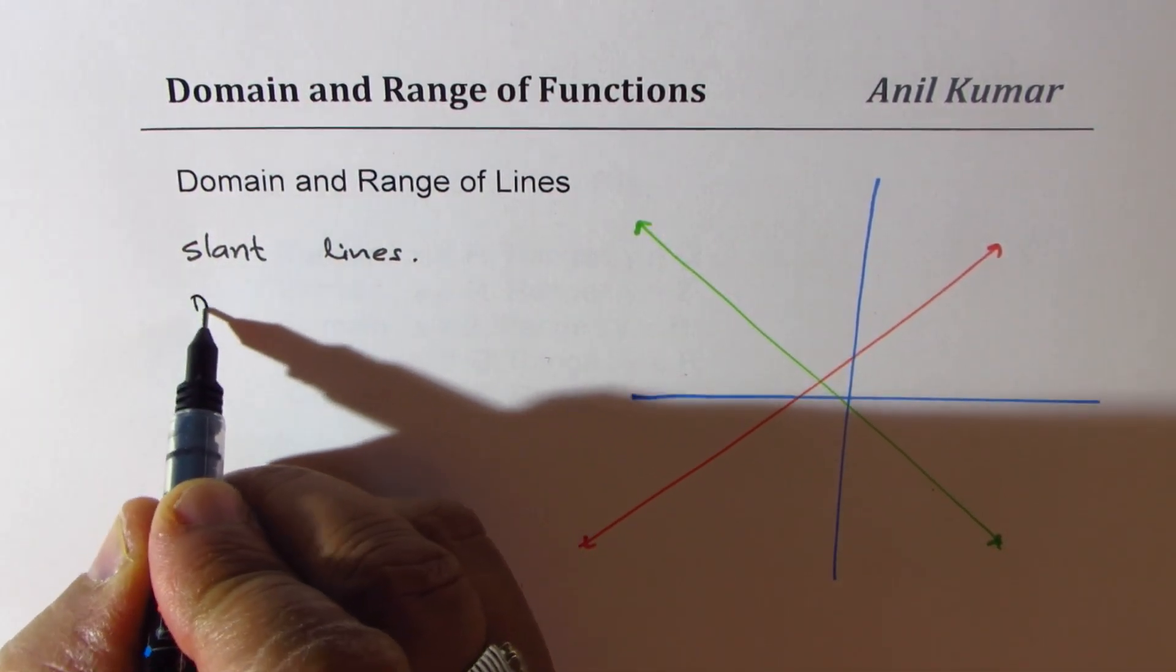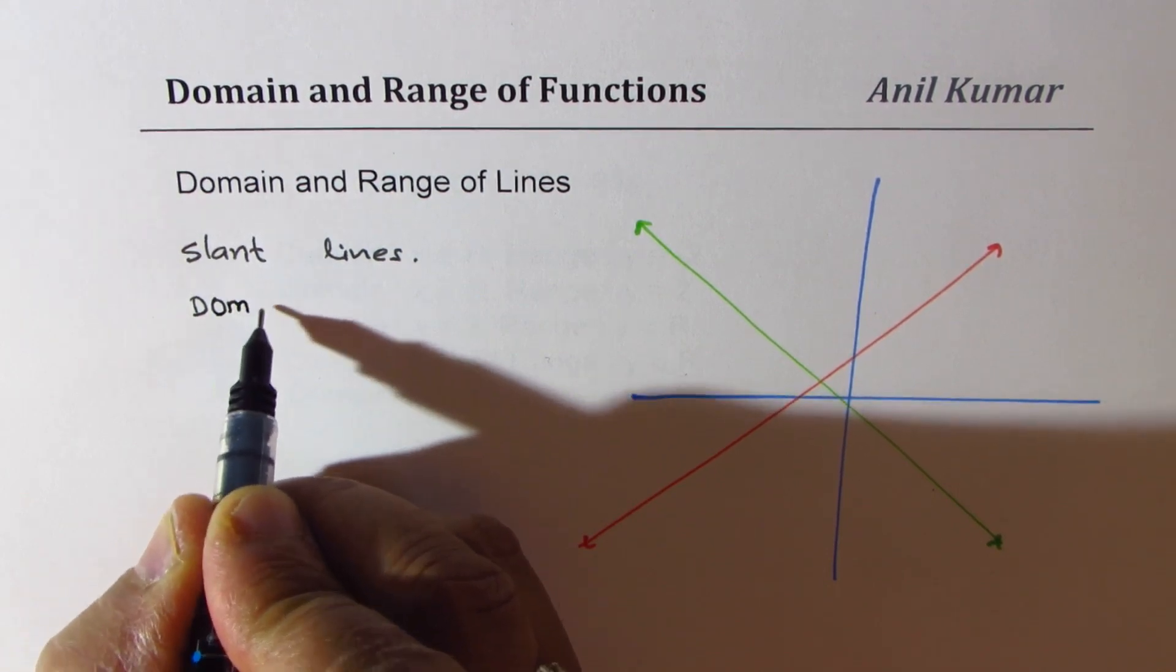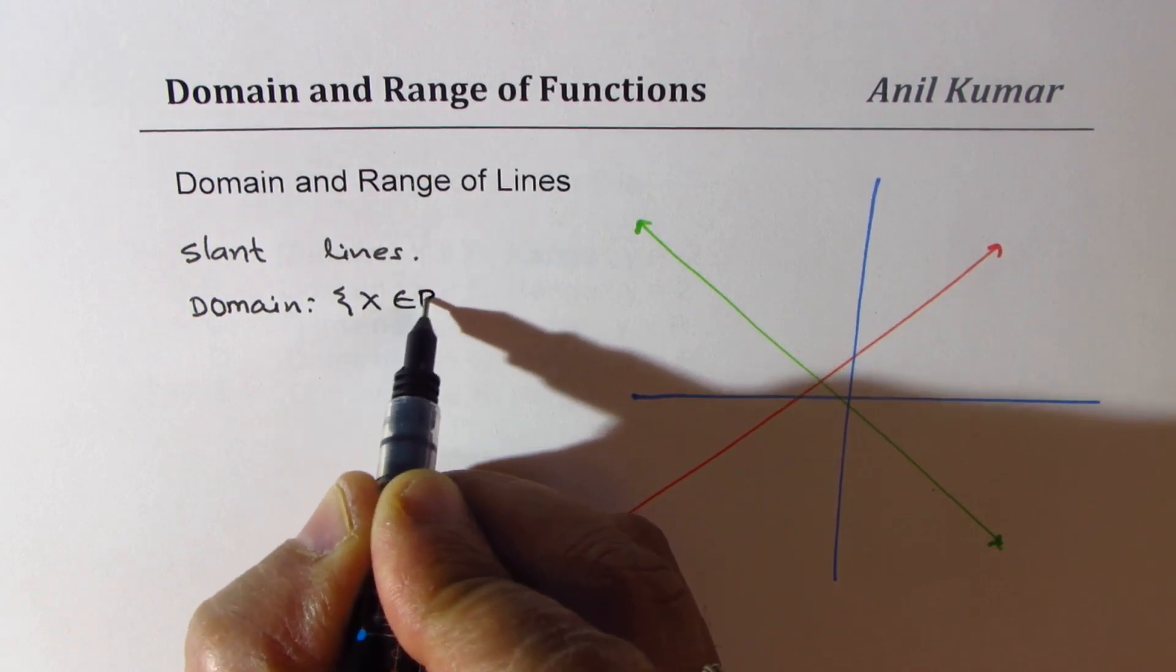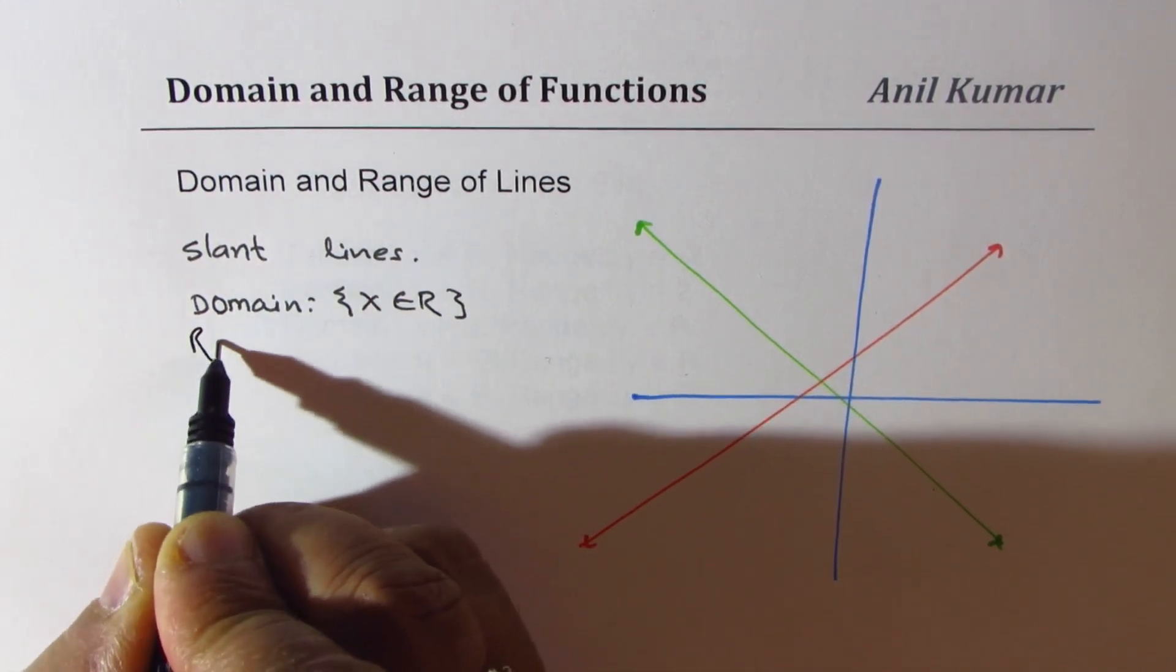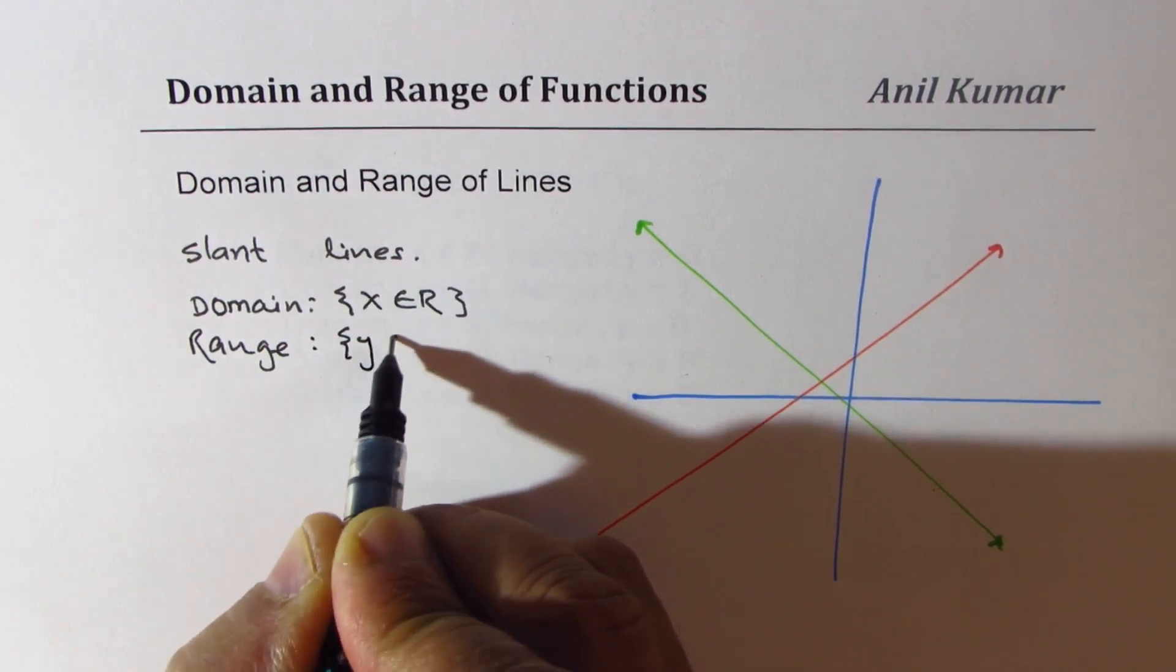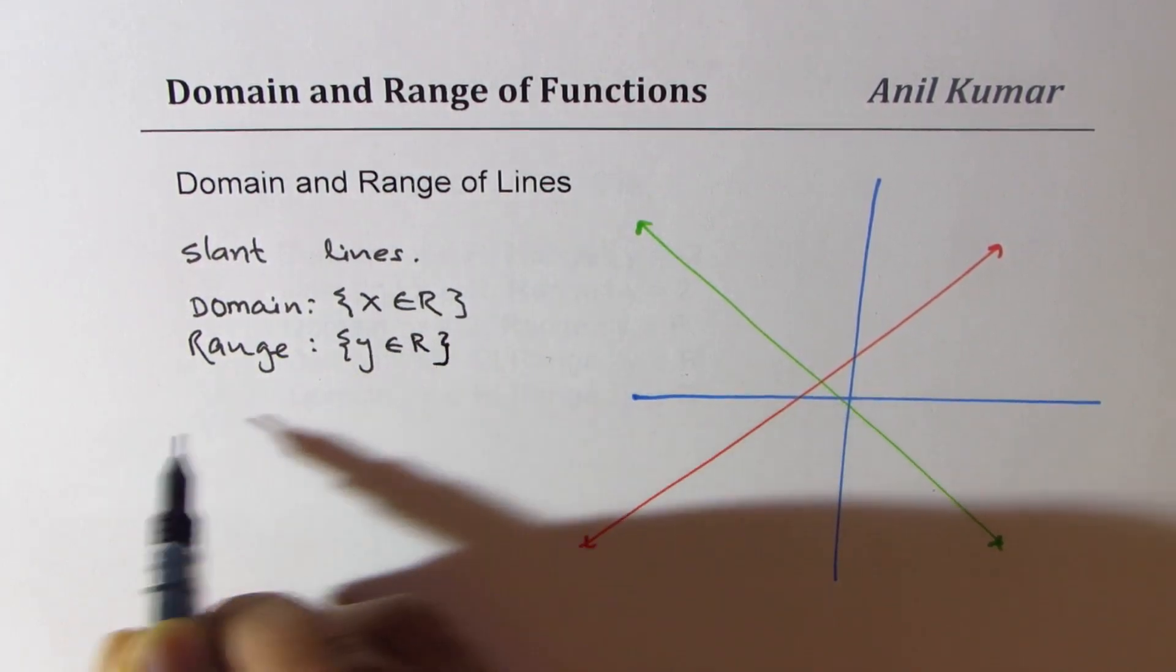Clearly for slant lines you can say domain—let's write domain—domain is X belongs to real numbers and range is Y belongs to real numbers. That means no restrictions.